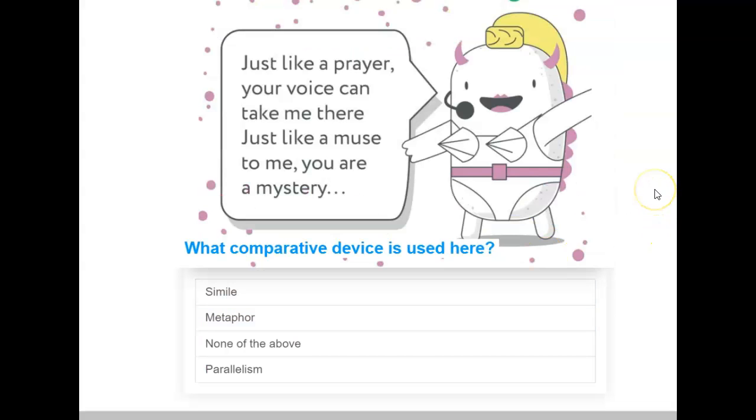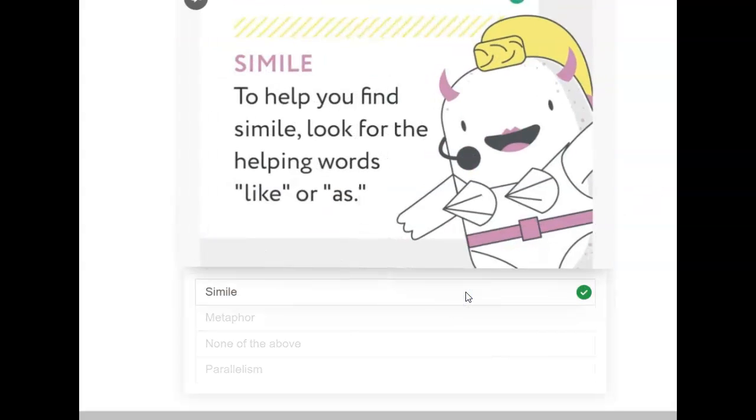All right. This is a song from Madonna. I'm back in the eighties. She says, just like a prayer, your voice can take me there. Just like a muse to me, you are a mystery. What literary device is being used here? A simile, a metaphor, none of the above, or a parallelism. This is a simile. We looked for the words like or as.